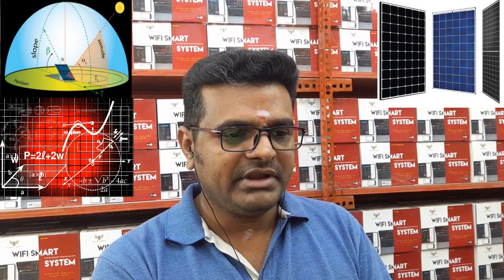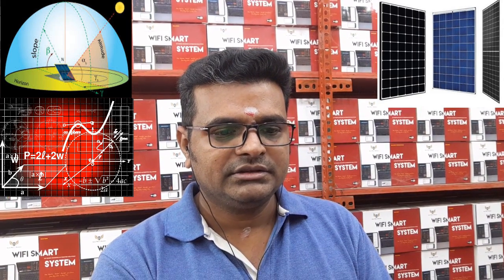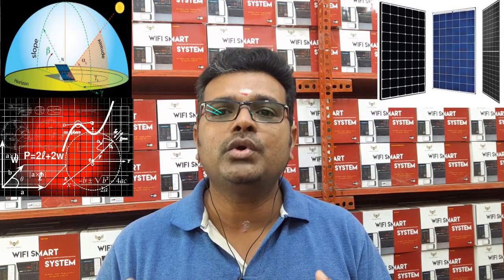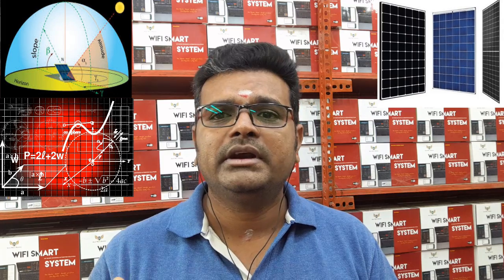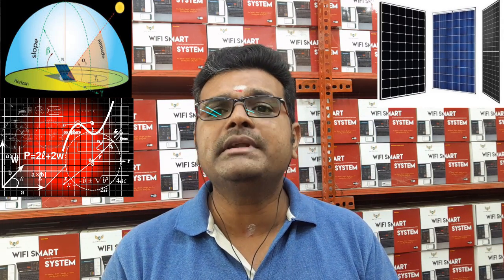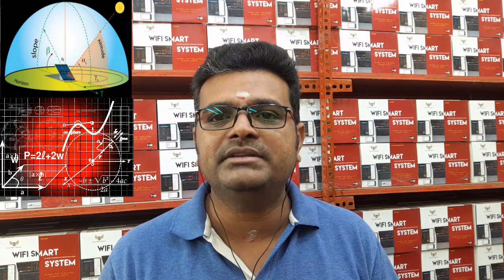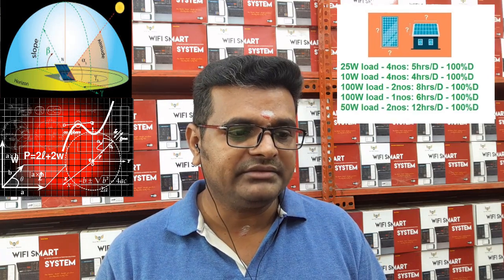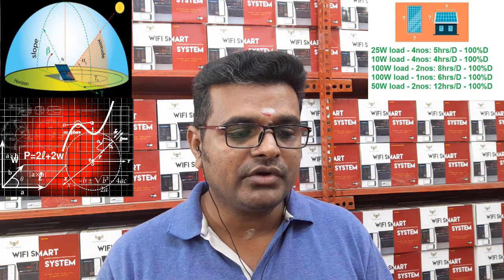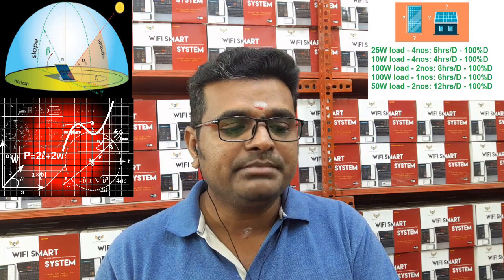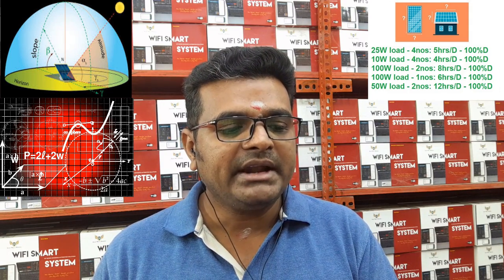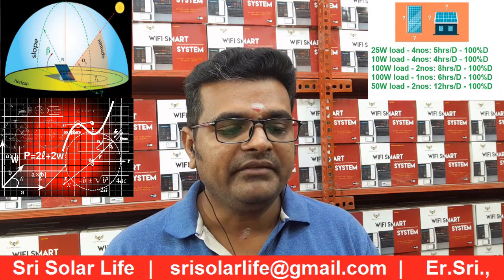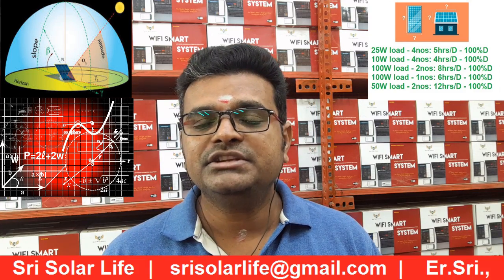Now let's look at the load calculations. We have taken only basic loads — no heavy loads like a geyser, AC, or motor. The loads considered are: 25W × 4 units running 5 hours/day; 10W × 8 units running 4 hours/day; 100W × 4 units running 8 hours/day; 100W × 1 unit running 6 hours/day; and 50W × 2 units running 12 hours/day — all at 100% duty cycle.